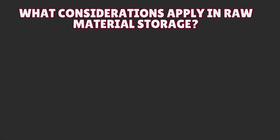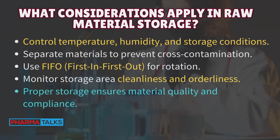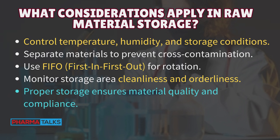What considerations apply in raw material storage? Control temperature, humidity, and storage conditions. Separate materials to prevent cross-contamination. Use FIFO (first-in-first-out) for rotation. Monitor storage area cleanliness and orderliness. Proper storage ensures material quality and compliance.